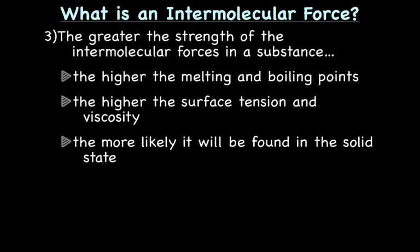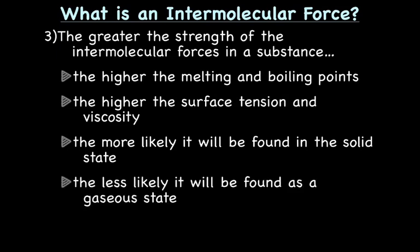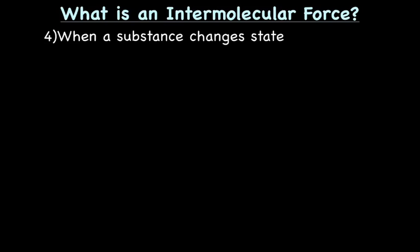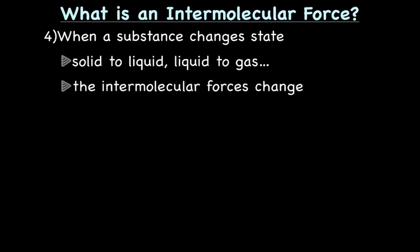The more likely the substance will be found in the solid state. Solids have stronger IMFs than liquids, and gases have almost non-existent IMFs, making it the less likely state for substances with strong IMFs. When a substance changes state — from solid to liquid, liquid to gas, etc. — what actually changes is the intermolecular forces. You're breaking or weakening some of those intermolecular forces to go from a solid to a liquid and a liquid to a gas.